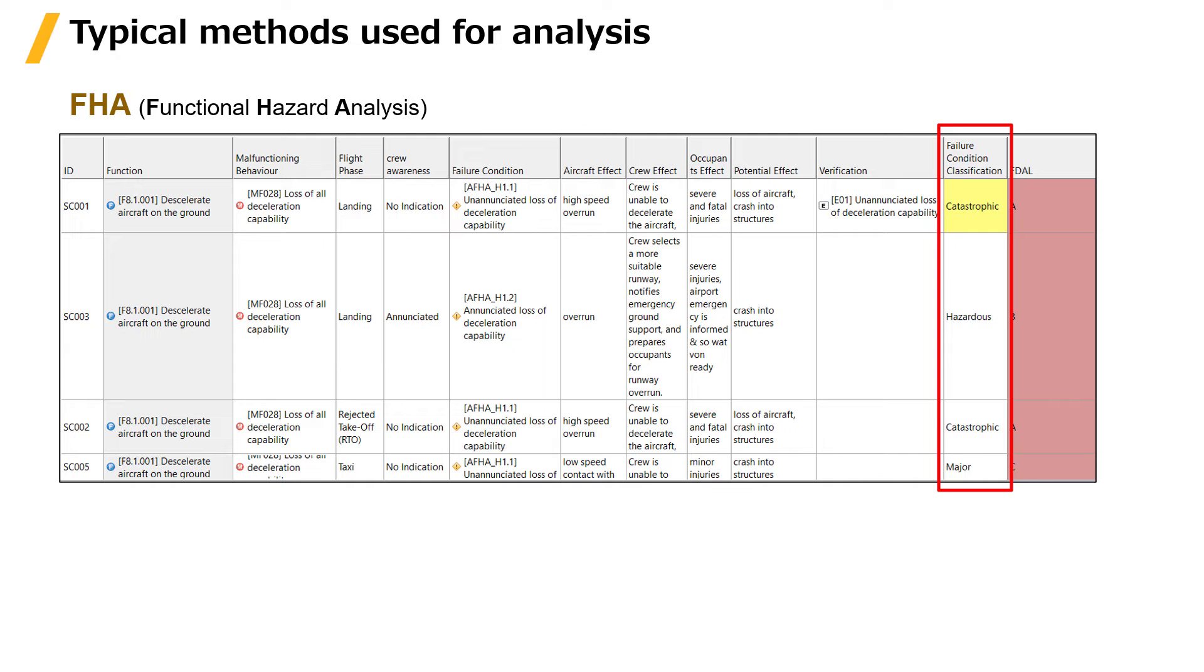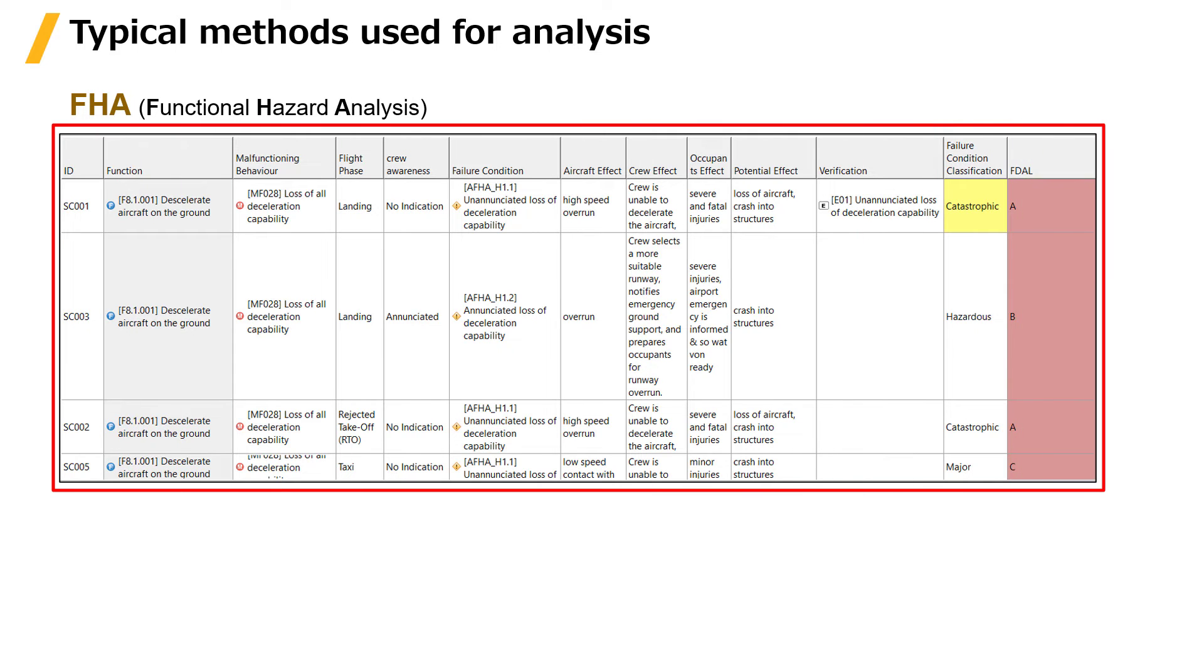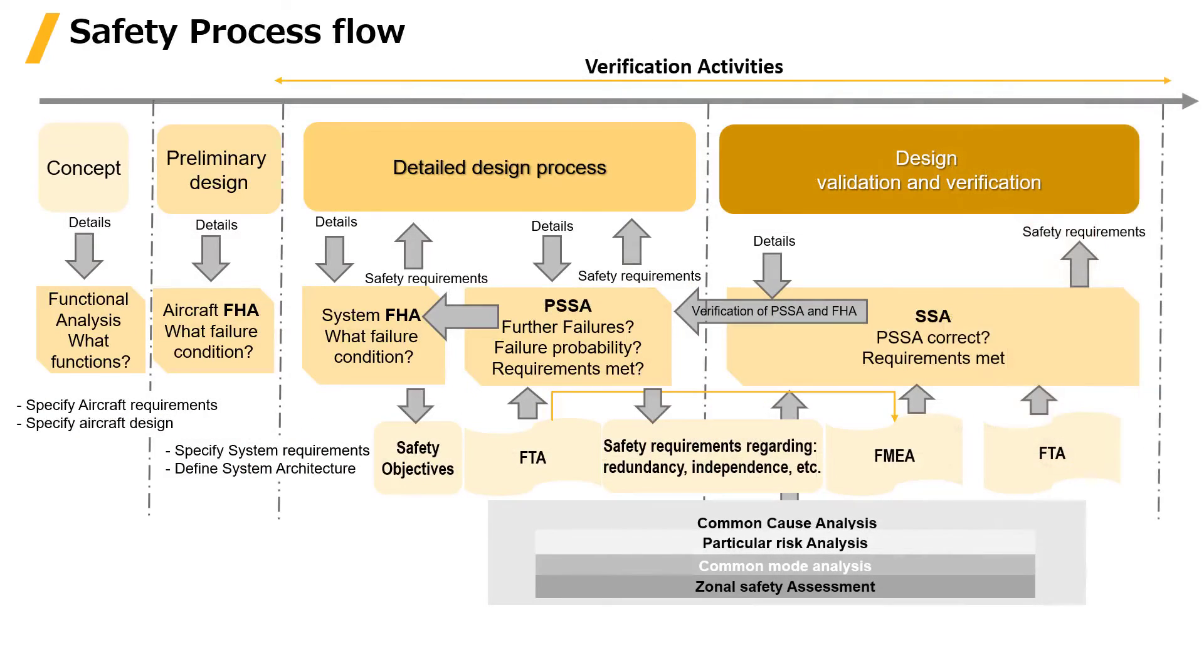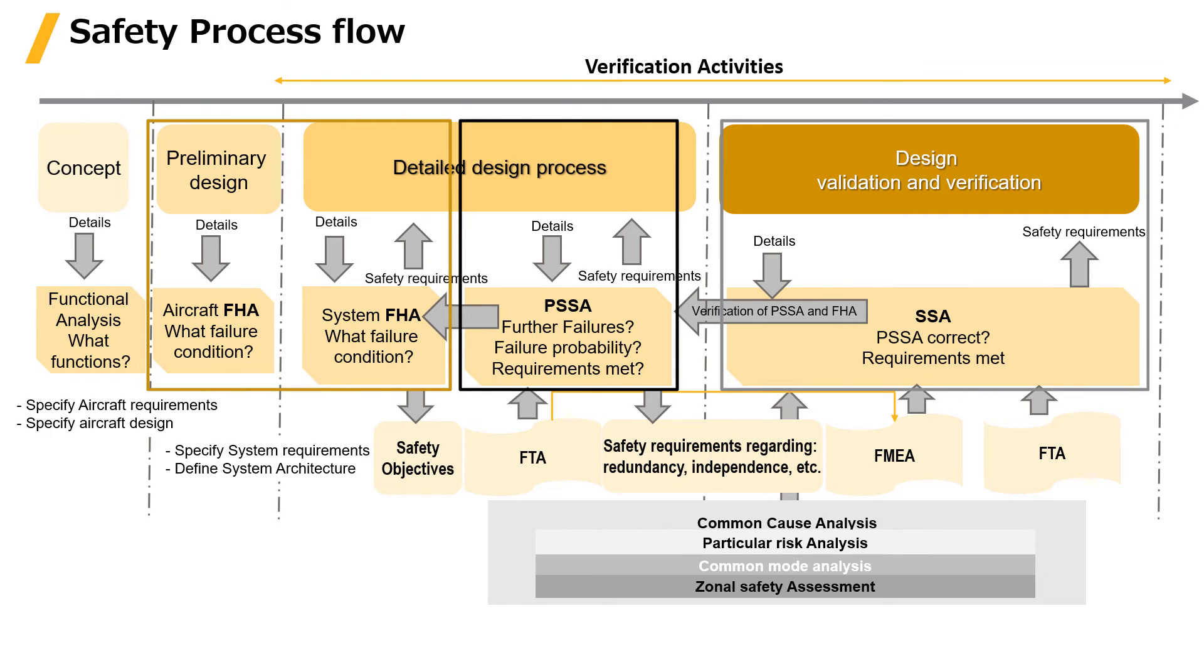The analysis results are also finally summarized in tabular form. This picture shows at what stage the process is performed and analyzed concerning the ARP 4761 and ARP 4754A safety process flow. You can see where the FHA, PSSA, and SSA processes are located and where FTA and FMEA are performed.